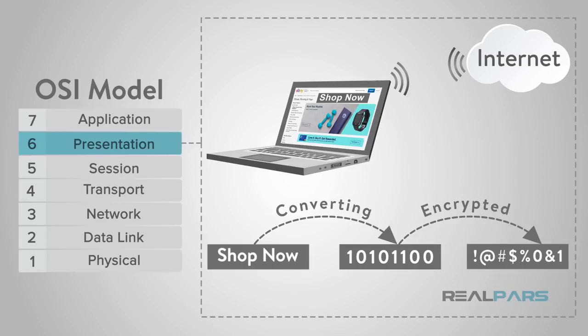This layer handles translating the data from the top layer, which is presented in application format, to network format, and vice versa. After the presentation layer processes the data from one format to another, the information is then passed to the session layer or the presentation layer, depending on whether the data is transmitting or receiving.